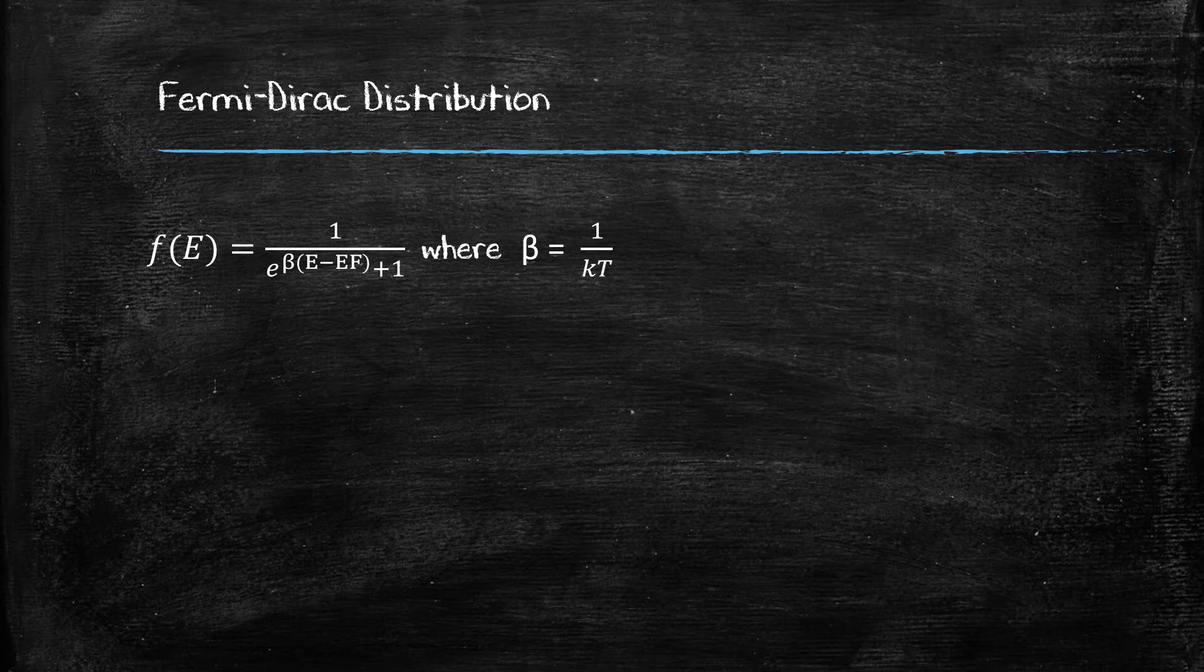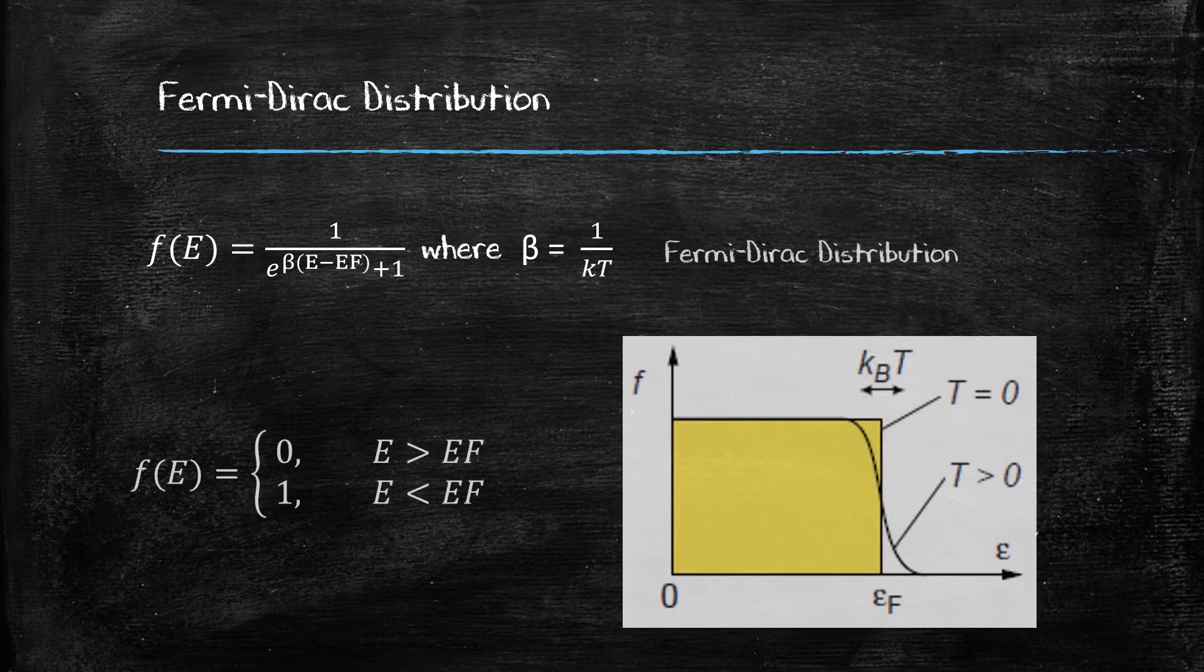At T equals zero Kelvin, or absolute zero, this distribution becomes a step function with respect to the energy, such that at an energy above the Fermi energy, the distribution goes to zero, and at an energy below the Fermi energy, the distribution goes to one, as shown by the yellow square. This states that the probability of finding an electron above the Fermi energy is zero, and the probability of finding an electron at an energy below the Fermi energy is 100% at absolute zero temperature.